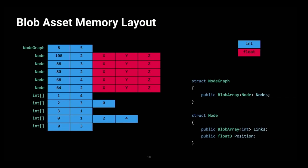Thanks to the use of offsets rather than actual memory addresses, we can copy a blob byte by byte without having to fix up any references.